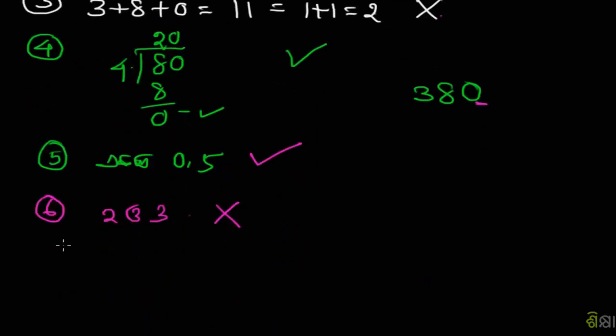For 9, add the digits: 3 plus 8 plus 0 equals 11. This is not divisible by 9.